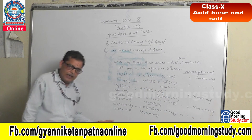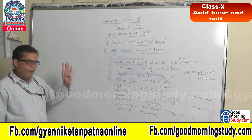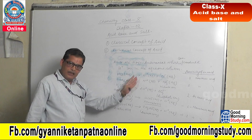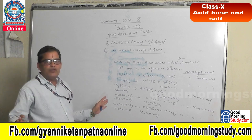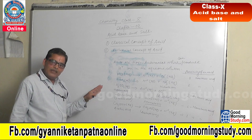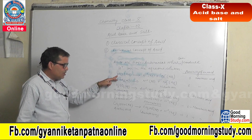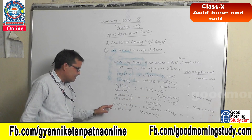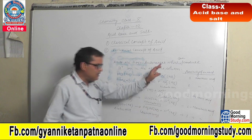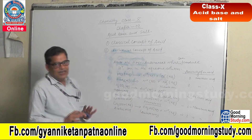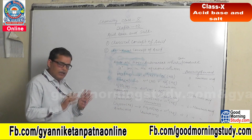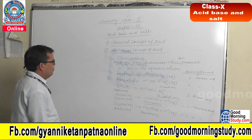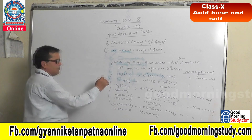I think all of you are clear about what basicity of an acid means. Basicity of an acid depends upon the number of replaceable H+ ions in the aqueous solution. Whatever H+ ions are produced in the aqueous solution, that will be the basicity of that acid. HCl: 1 H+, HNO3: 1 H+, H2SO4: 2 H+, HCOOH: 1 H+, CH3COOH: 1 H+. That is why they are called monobasic or dibasic acids depending upon the number of replaceable H+ ions. These are the Arrhenius concepts of acid.